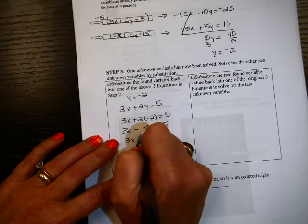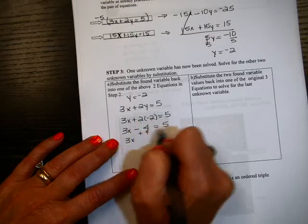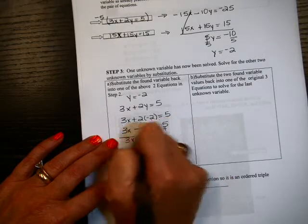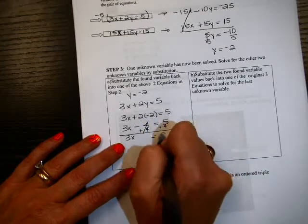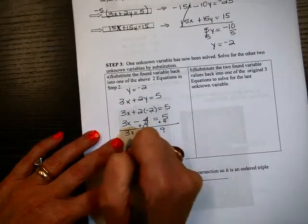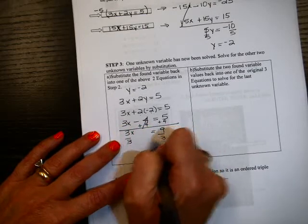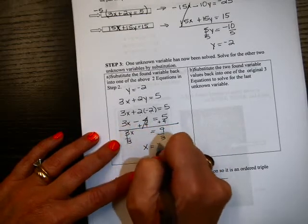So 3x, 2 times negative 2 is negative 4, equals 5. So 3x, let me put this right here for you guys. There you go. Add 4 to both sides. So 3x equals 9. Divide both sides by 3. So x is 3.